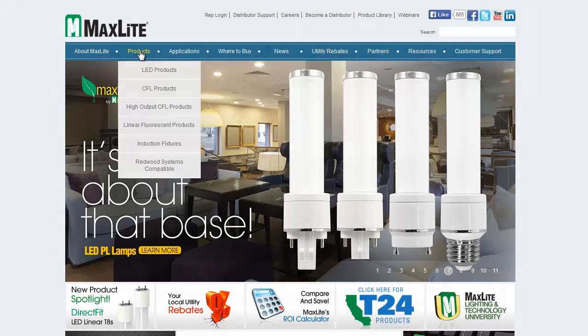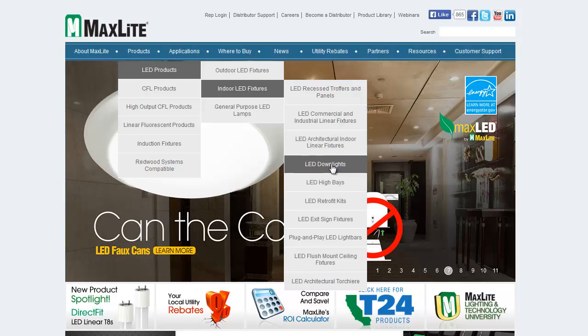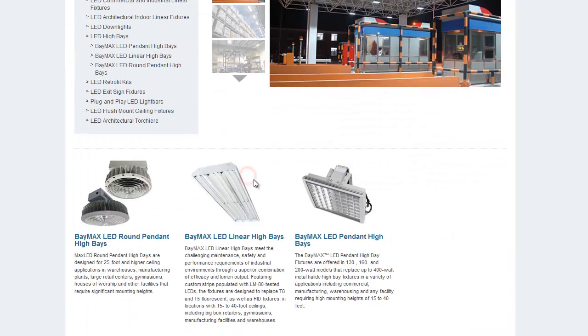First, we'll go to maxlight.com and navigate to the Products page. Next, we'll select the Lighting Layouts tab.